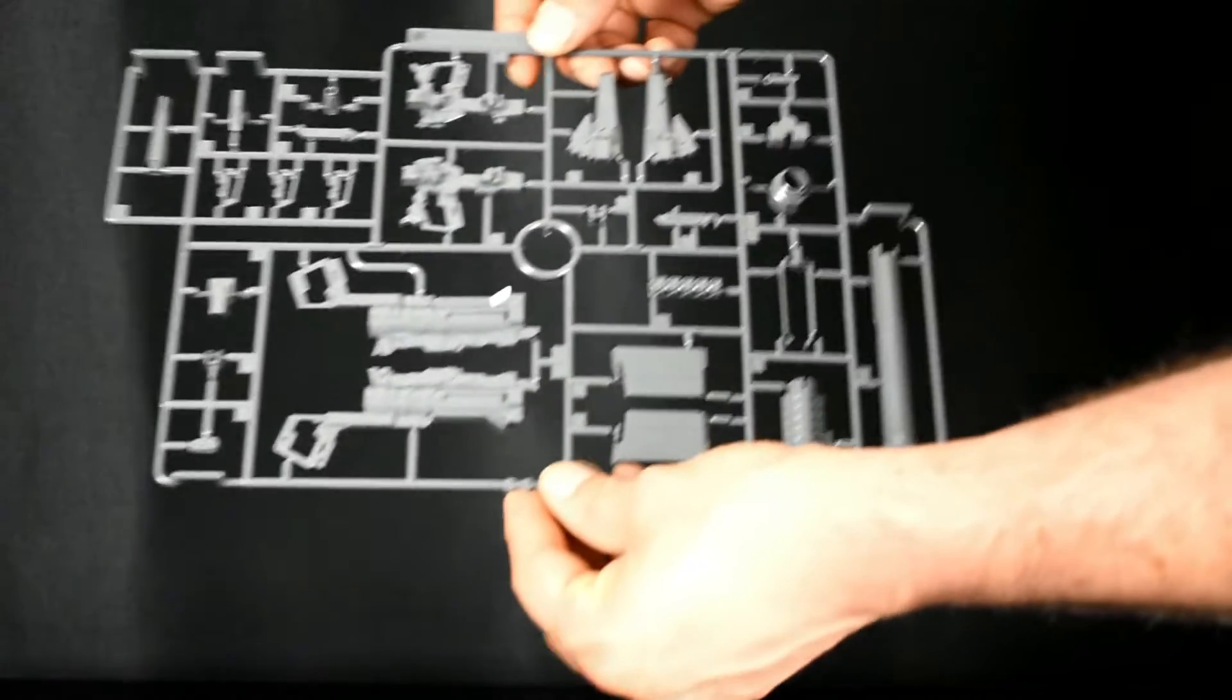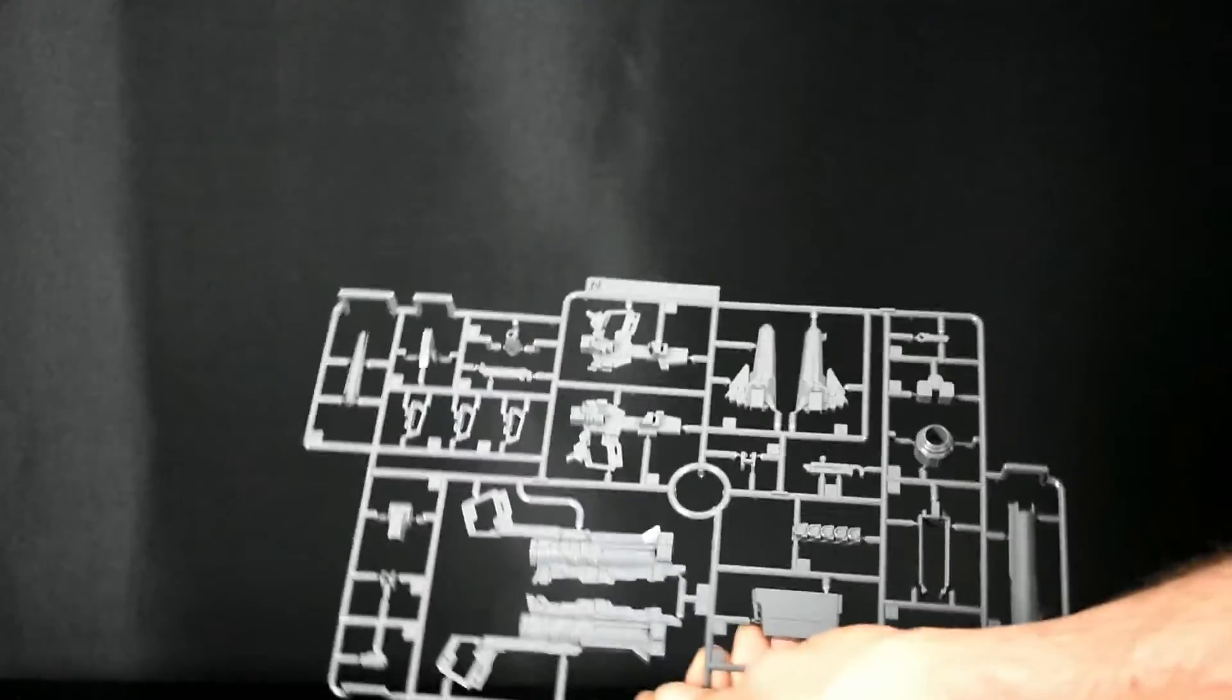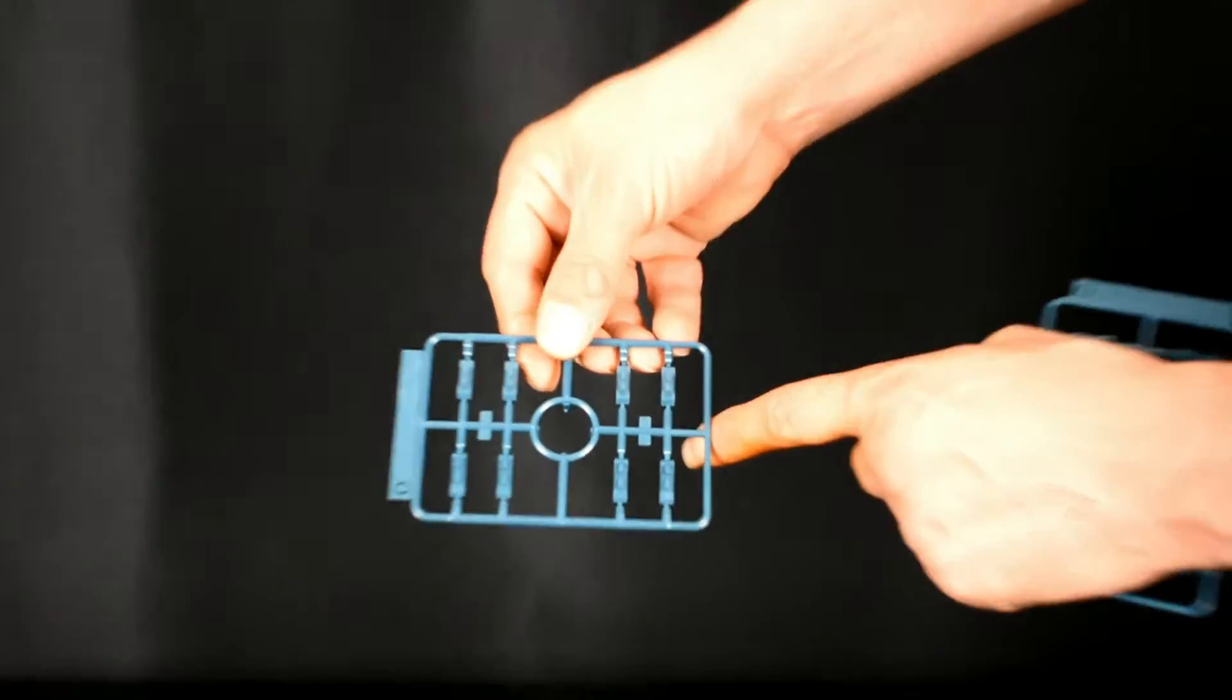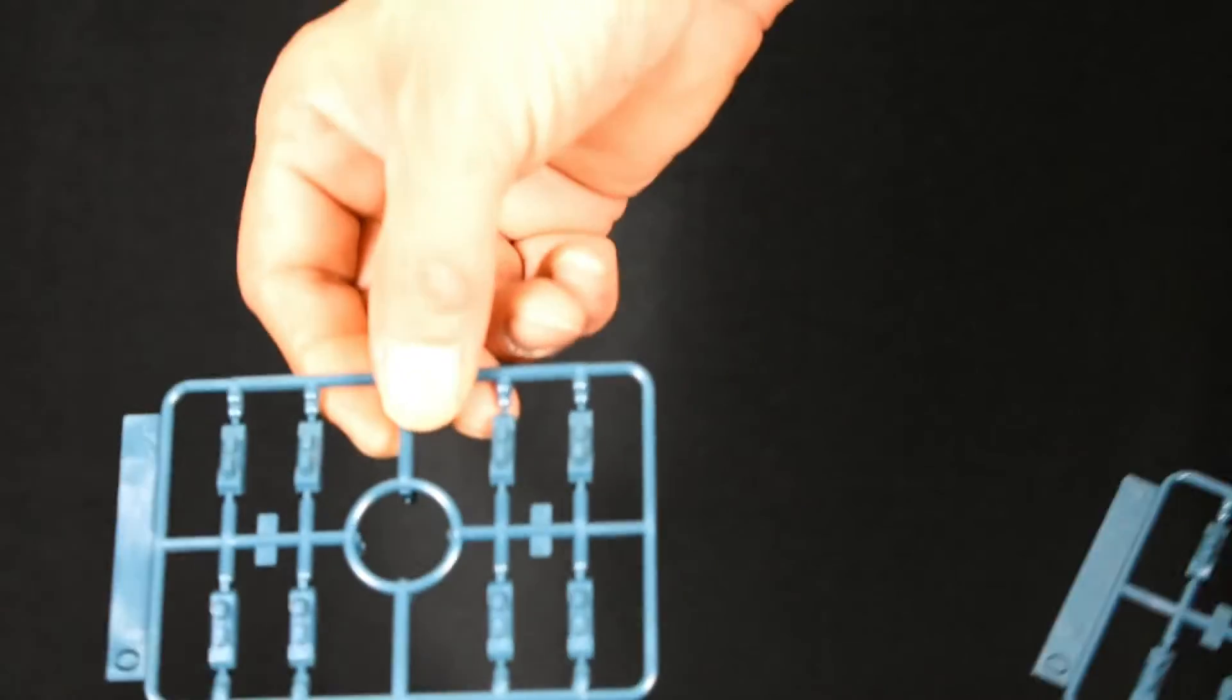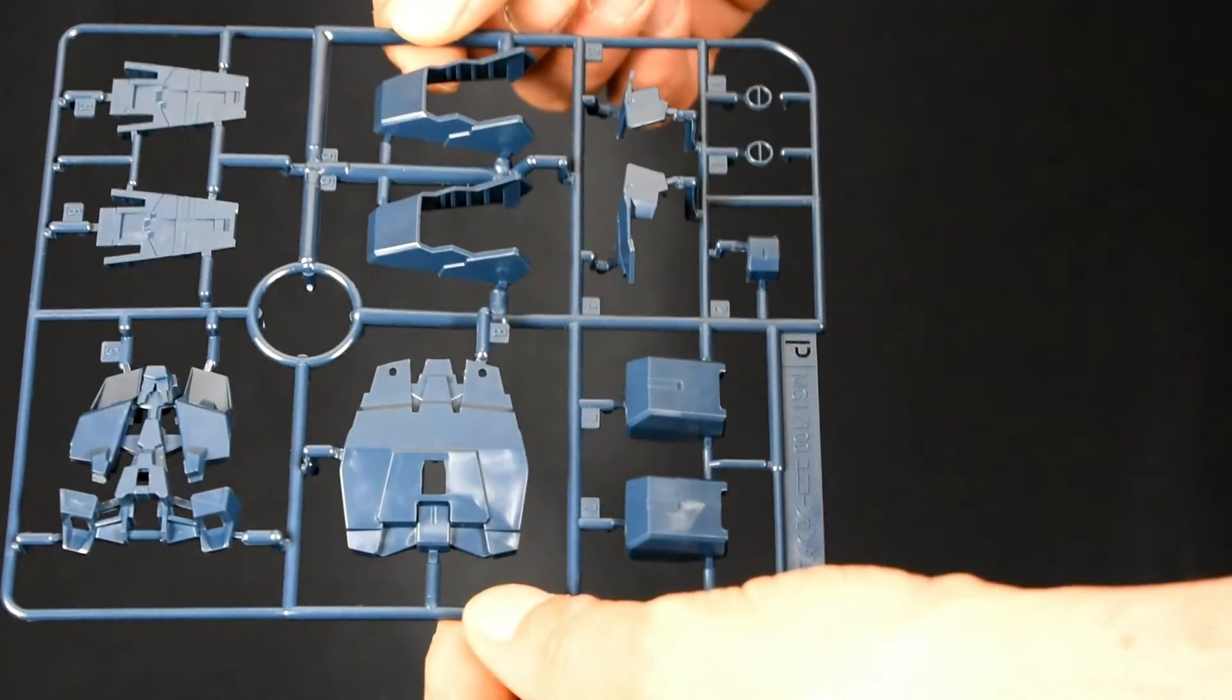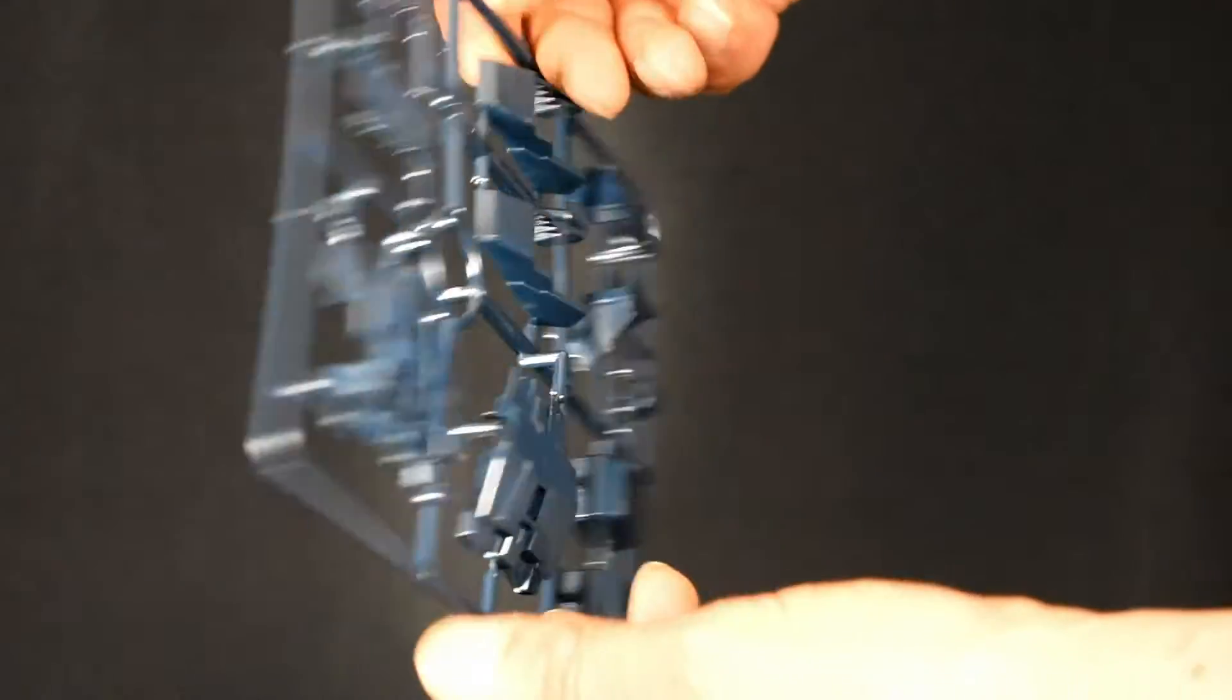Runner M, Runner M, part of the waste. Runner N, weapons. Weapons, you get two identical runners for that. Runner O, ammunition packs. Two runners of that. Runner P, backpack and V fin.